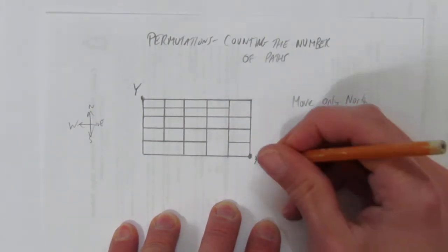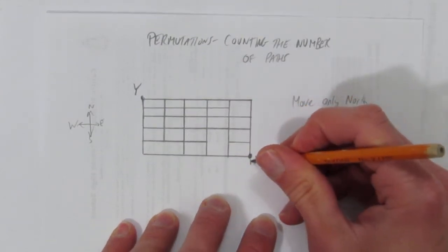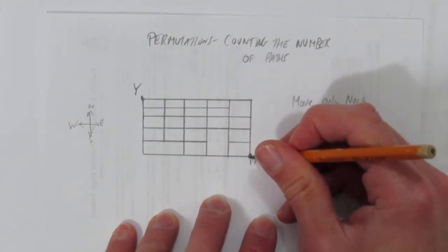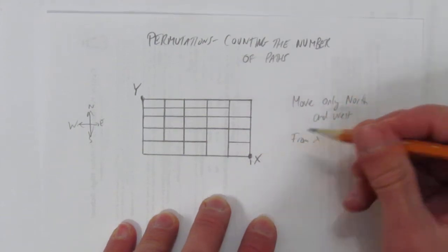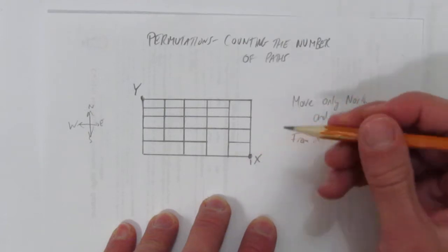You start at x. There's only one place to start, x, so you put a 1 there. And then from that spot, you can move to the adjacent spots as long as you only go west or north. I might refer to them as left and up. Same thing.